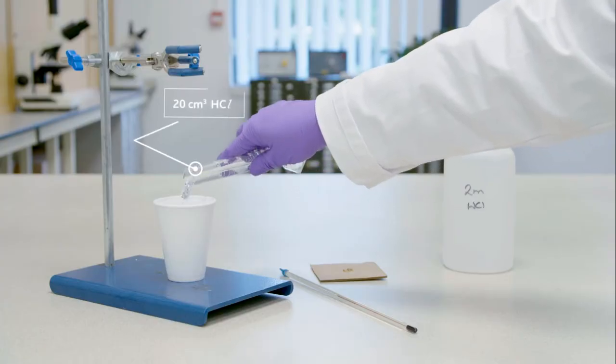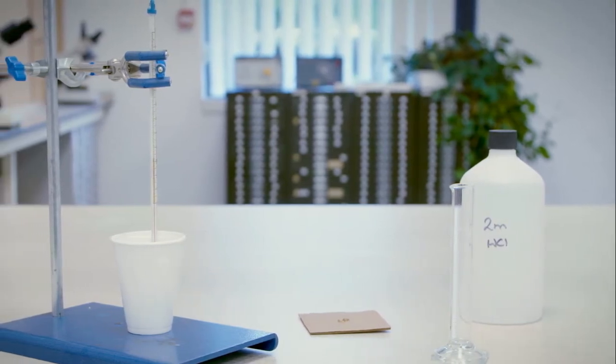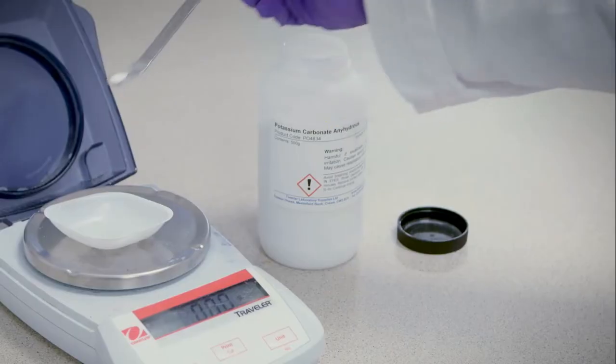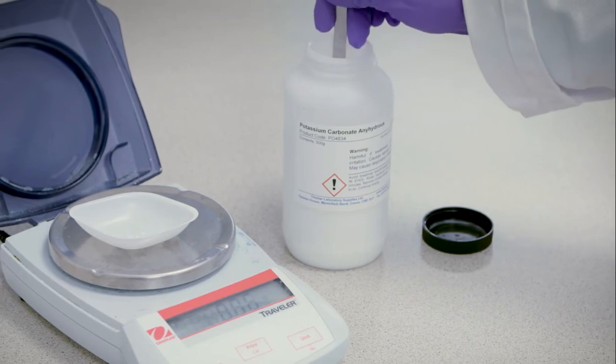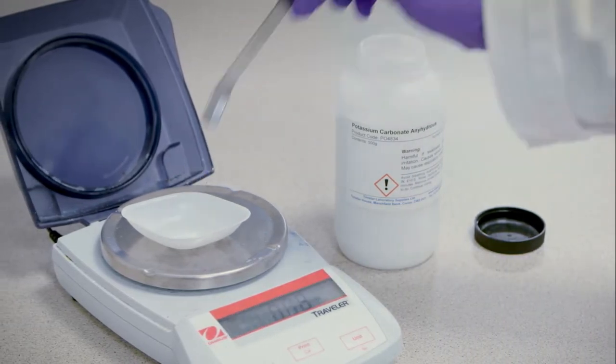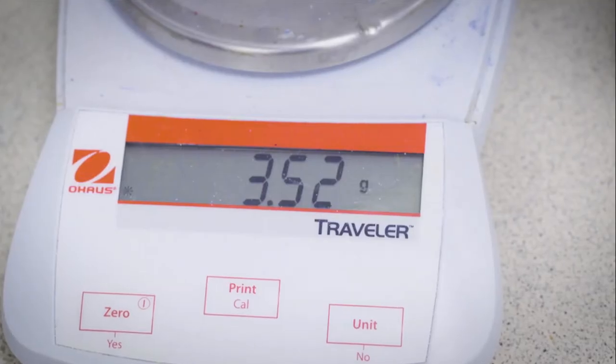The experiment is now repeated using anhydrous potassium carbonate. The same volume and concentration of acid is used. As before, the initial temperature of the hydrochloric acid is recorded. Anhydrous potassium carbonate is accurately weighed out and should be between 3.25 and 3.75 grams. The accurate mass is recorded.